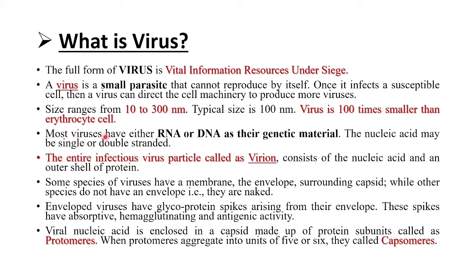Most viruses have either RNA or DNA as their genetic material. The nucleic acid may be single-stranded or double-stranded. The entire infectious virus particle, called a virion, consists of nucleic acid and an outer shell of protein. Some species of viruses have a membrane — the envelope — surrounding the capsid, while other species do not have an envelope, i.e., they are naked.